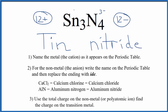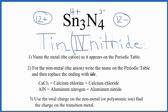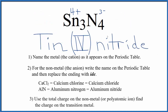Three times 4 plus gives us 12 plus. So we know that each tin has a charge of 4 plus. We're going to write Roman numeral IV between the names, making the full name for Sn3N4 tin(IV) nitride.